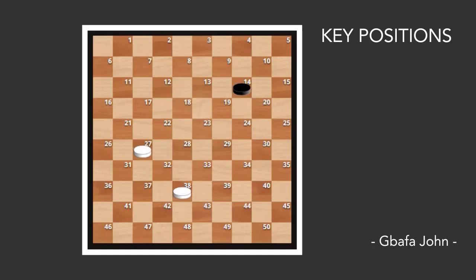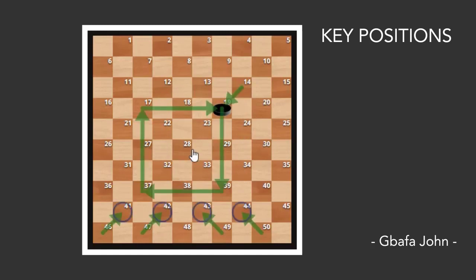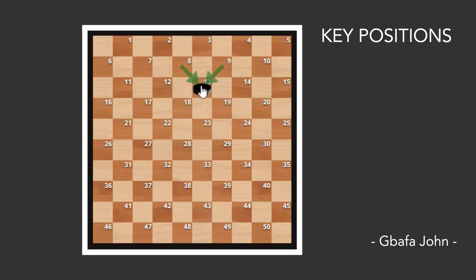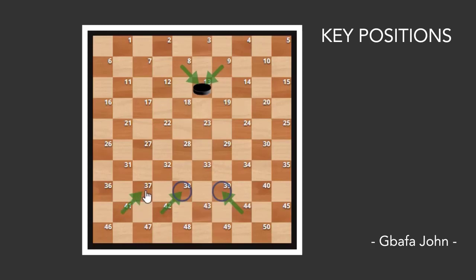Let's take the second key position. If your opponent plays from 9 to 30 or occupies square 13, what we need to do is move our piece to 39. So if you have a piece at 44, 44 will move to 39. If you have a piece at 42, 42 can move to 38. In the same way, if you have a piece at 41, 41 can move to 37.